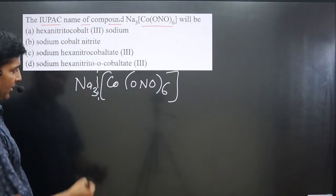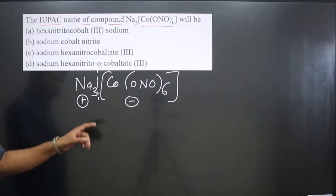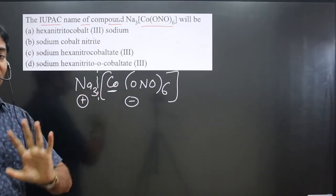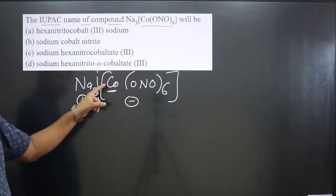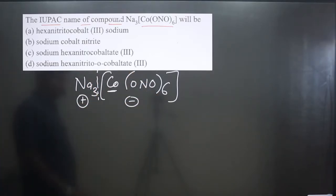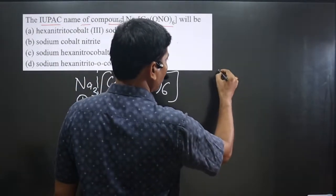The central element is present in the anionic portion, which means we have to use the special name for cobalt - cobaltate. The order we follow to name a complex is: number of ligands, then type of ligand, then central metal atom, and then the oxidation number of the central metal atom.